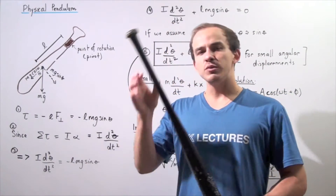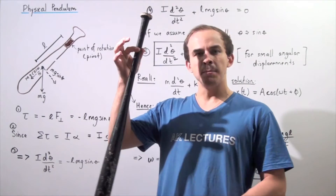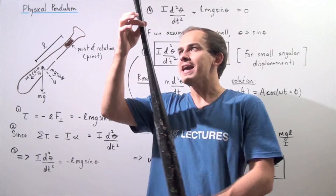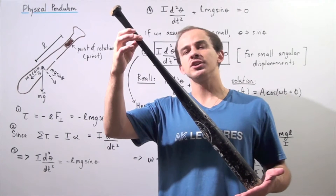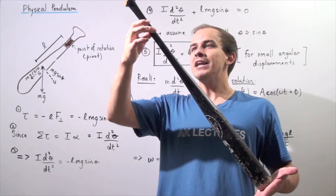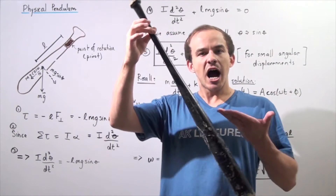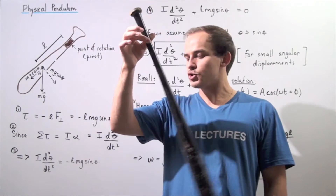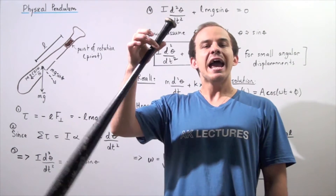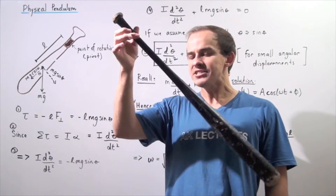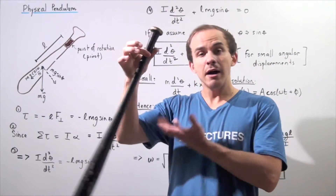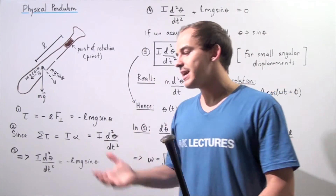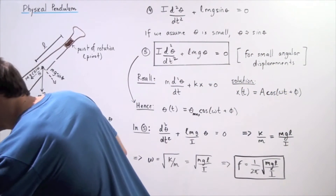Suppose we pivot our baseball bat at some position, raise it a certain angular displacement, and then let go. The object will begin to oscillate, swinging back and forth. We want to answer the question of whether or not the physical pendulum is capable of experiencing simple harmonic motion.